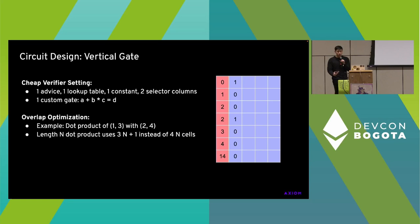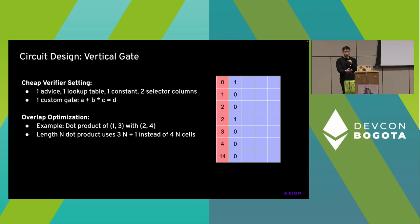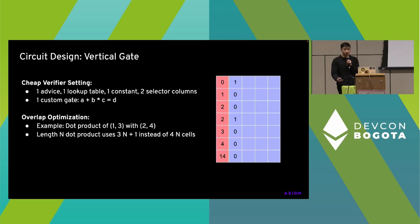Let me tell you how we build all of these circuits. We have a very modular approach. In Halo 2 you're allowed to use a lot of custom gates, but we're very simple-minded, so we use a single custom gate. Our gate has four vertical cells, and starting from the top, our gate is just A plus B times C equals D. In this example, if we want to compute a dot product of (1, 3) with (2, 4), we first apply a gate on the top four cells — that says 0 plus 1 times 2 equals 2 — then overlap it with a gate on the bottom four cells, which says 2 plus 3 times 4 equals 14. This simple overlap optimization gains us about a 25% gain for all dot product operations, which make up maybe 80% of all the operations we do.